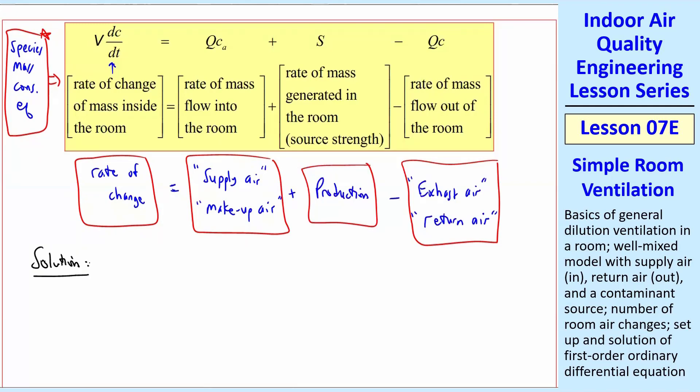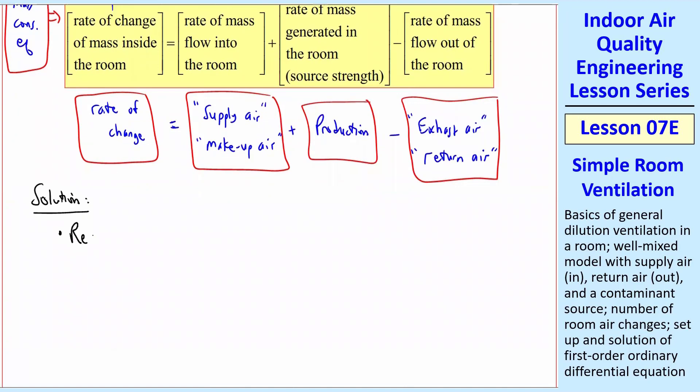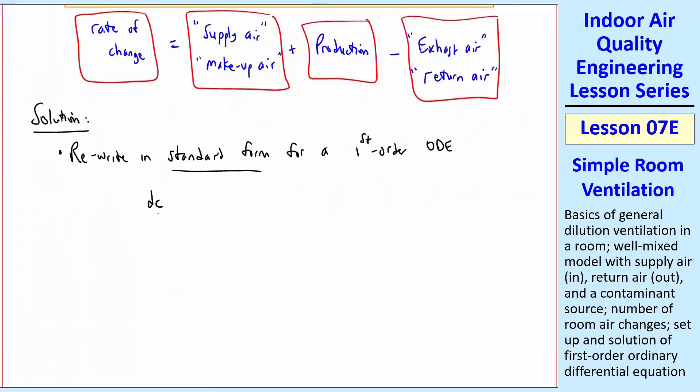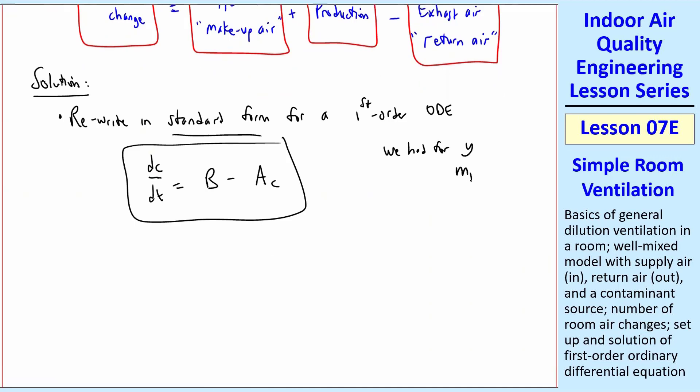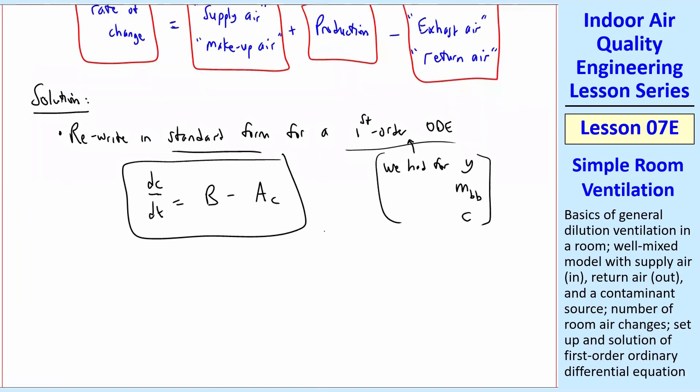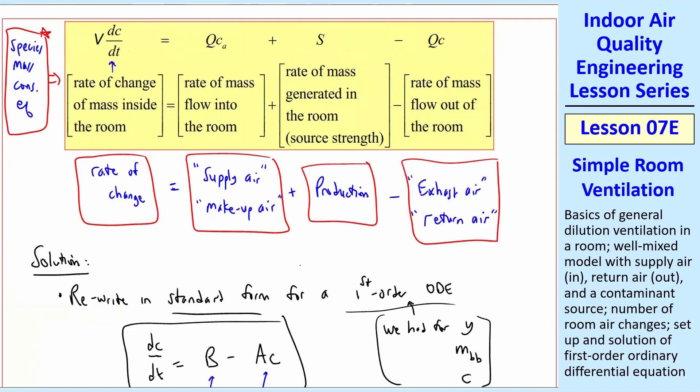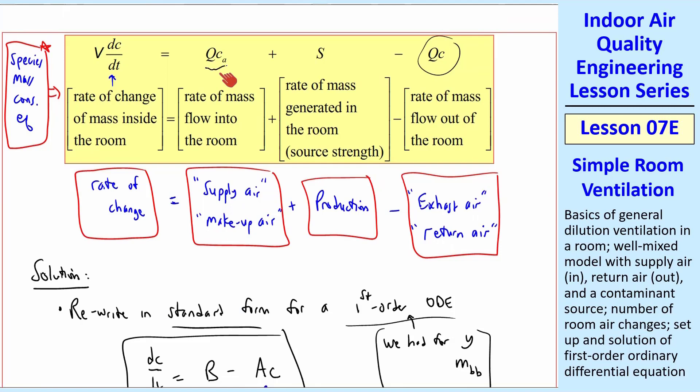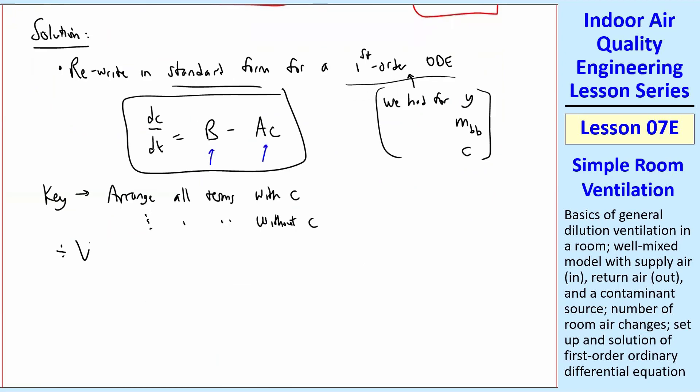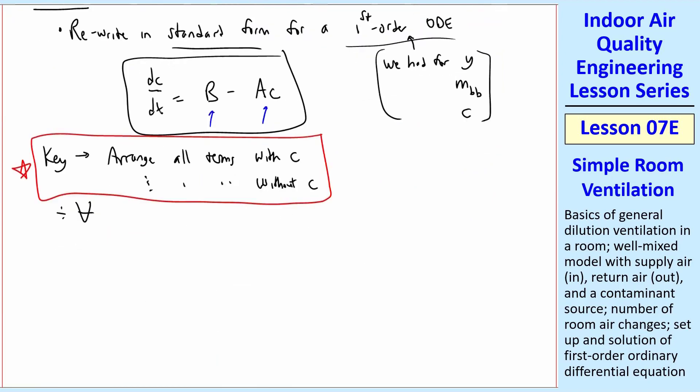How do we solve it? Again, you can look back at your notes for flux chamber, because this is really the same equation. What we're going to do is first rewrite in what we call standard form for a first order ODE. If you remember, our standard form was dC/dT equal B minus AC. We had for Y, a mole fraction. We had it for MBB, mass body burden. We had it for C, for flux chamber. It's all the same. You're just using a different variable. So I'm going to rewrite this equation. The key is to arrange all terms with a C and all terms without C. So all the terms with C, I see only one here. All the terms without C, I see this and this. And of course, the left-hand side means the same. And we're going to divide by V, the volume. This will be very important later on.